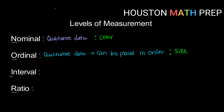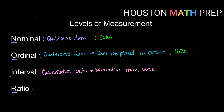If we move up to the third level we get the interval level. This one is now for quantitative data, and we are interested in the interval between things, meaning that subtraction makes sense. An example of interval data, sticking with our jersey example, might be the number on the back. So if I have jersey number 7 and my friend has jersey number 10, there are 3 numbers between our jerseys — we can talk about the interval.